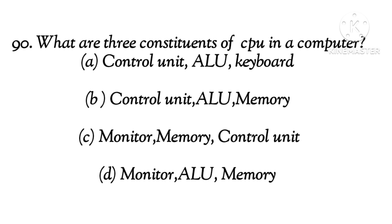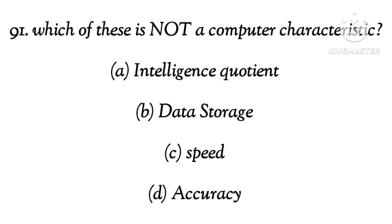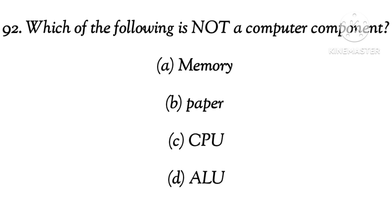Question 90: What are the three constituents of CPU in a computer? The right answer is control unit, ALU, and memory. Question 91: Which of these is not a computer characteristic? The right answer is A. Question 92: Which of the following is not a computer component? The right answer is B.